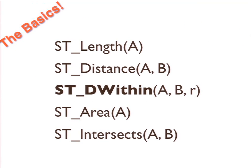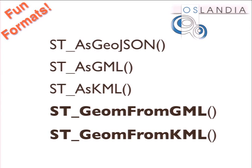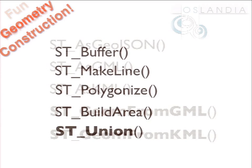You can use basic functions: length, distance, DWithin, area, intersects — simple spatial predicates from the OGC Simple Features for SQL spec. You can use basic input-output formats: taking geometries and turning them into text or binary and back. There are also more fun formats: JSON outputs, GML outputs, KML outputs, and inputs from GML, KML, and JSON as well.